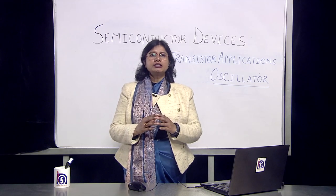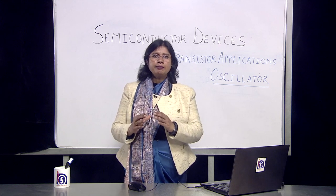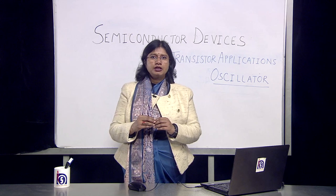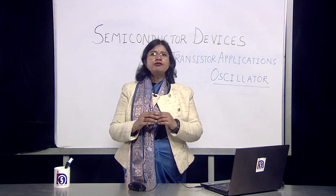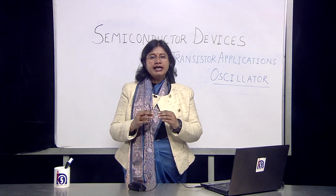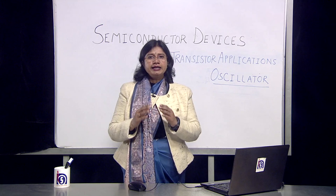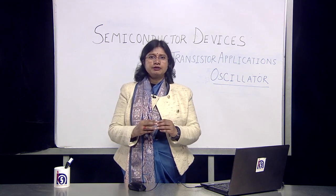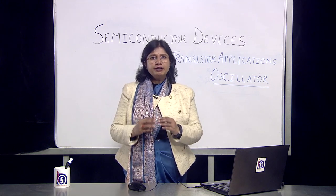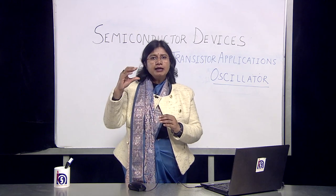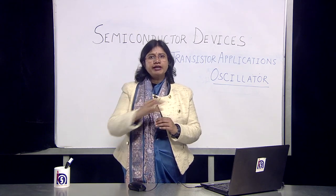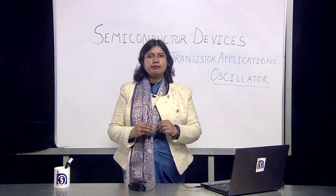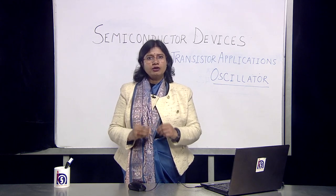An oscillator is capable of generating continuous electric oscillations. So apart from being an amplifier, it has an additional component — it is an amplifier with a feedback mechanism. A feedback mechanism means that some part of the output is fed back as input. Let's look at the schematic diagram of an oscillator.